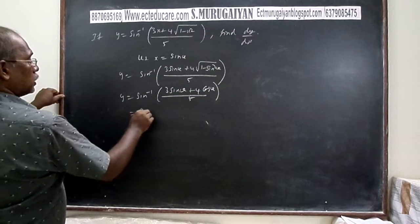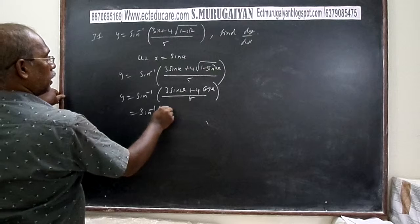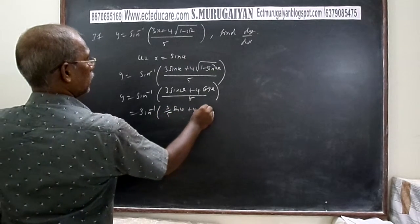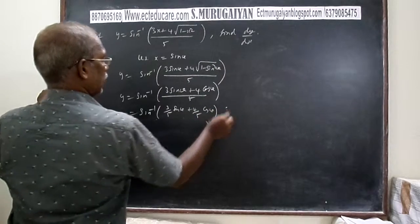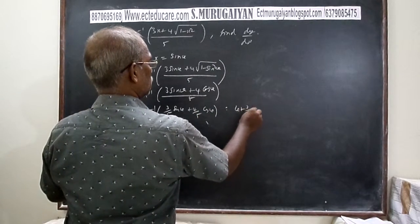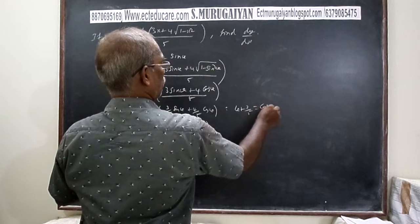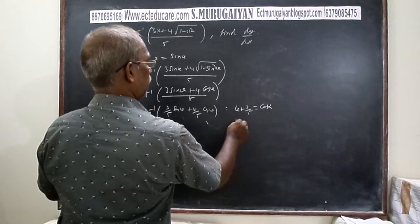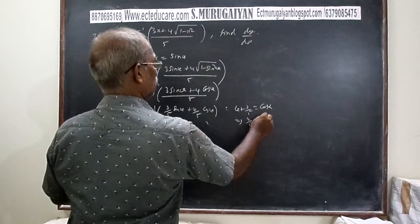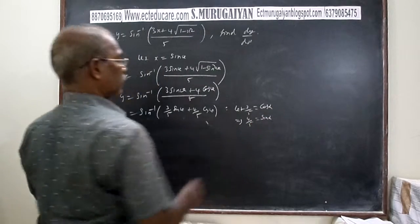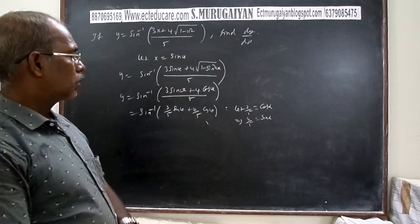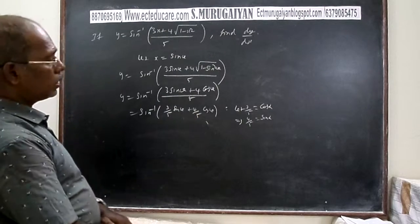We can write this as sin inverse of (3/5 · sin θ + 4/5 · cos θ). Now, take 3/5 = cos α, which means 4/5 = sin α, because 3, 4, 5 form a Pythagorean triplet.